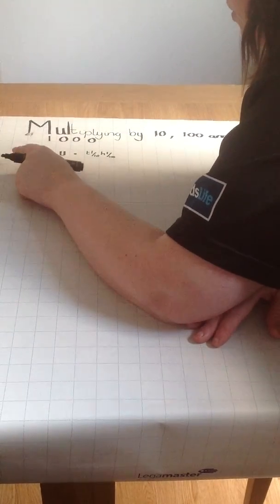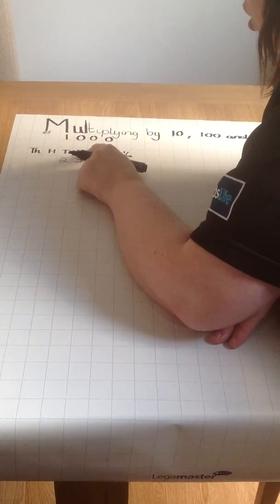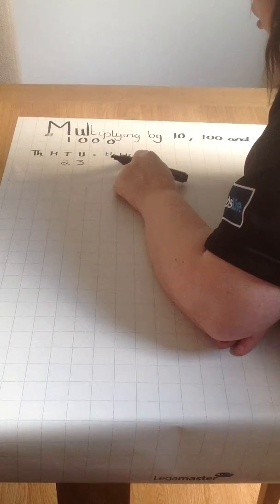The first thing to do is to write your place value headings: 1000, 100, 10s, units, 10ths and 100ths.